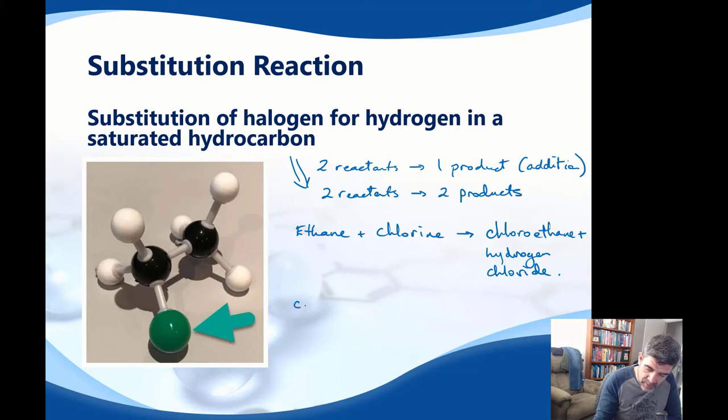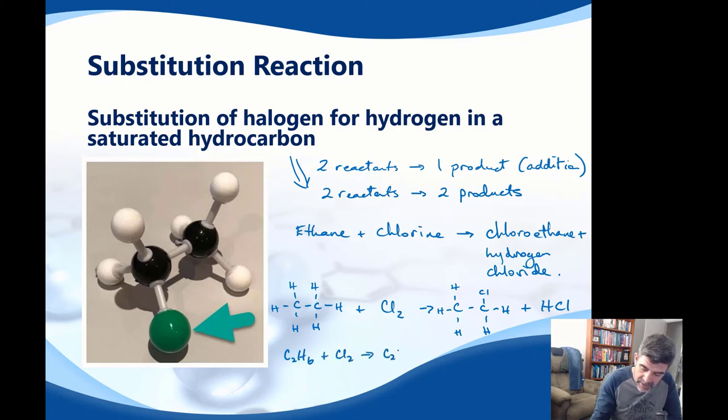Let's have a quick look at the structural formula. We have ethane plus Cl2 giving us chloroethane plus HCl. If we contract those a little bit further, you can see we've got C2H6 plus Cl2 gives C2H5Cl plus HCl.